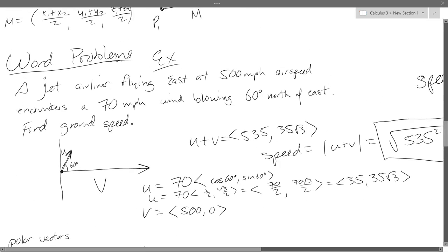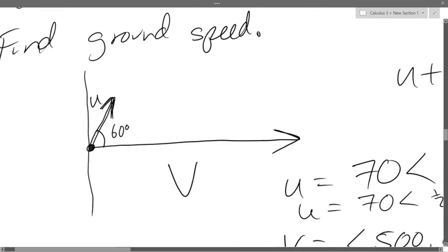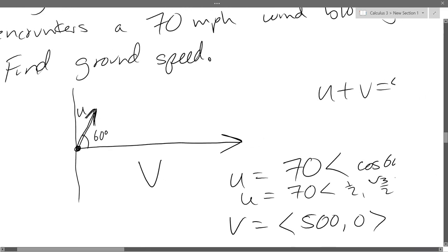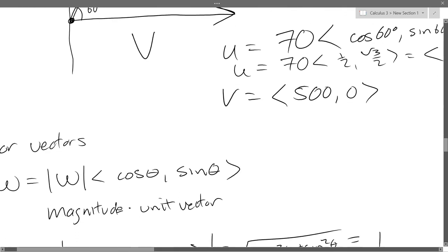So we had a jet airliner flying east at 500 miles an hour and had a 70 mile an hour wind blowing 60 degrees north of east. We're going to find the ground speed. We've got our velocity of the jet, that's the V, the big vector. And then the small one, u, is velocity of the air or the jet stream. We needed to write them in polar form.